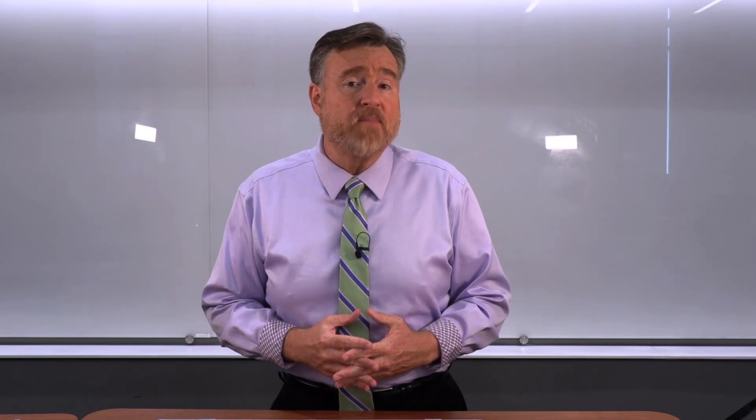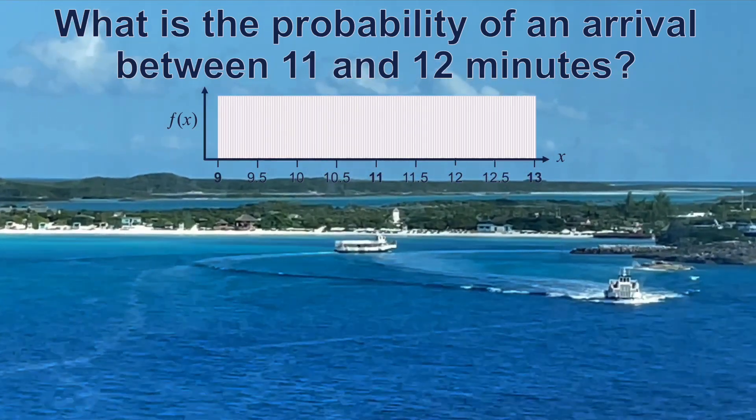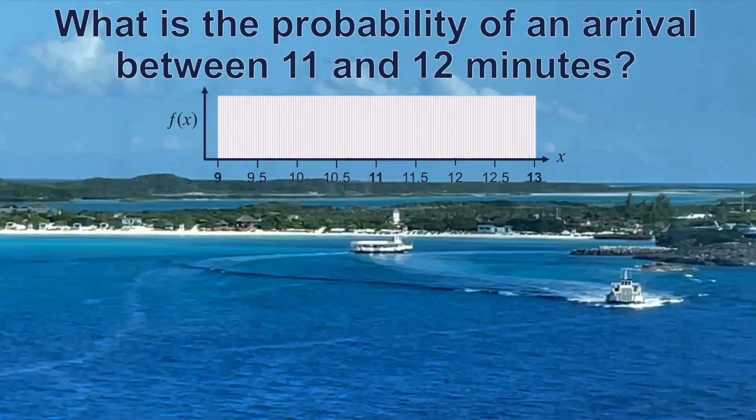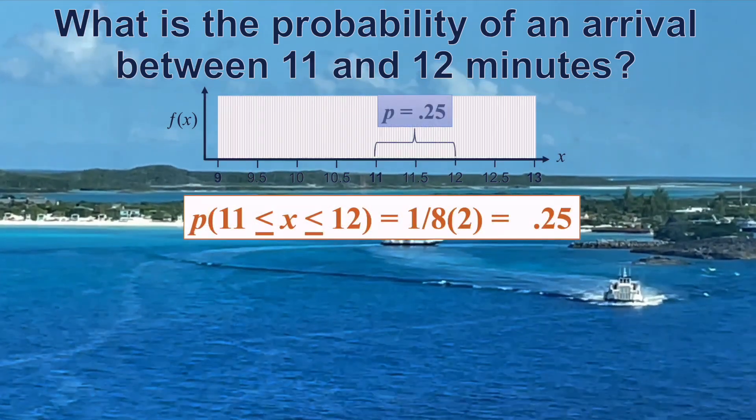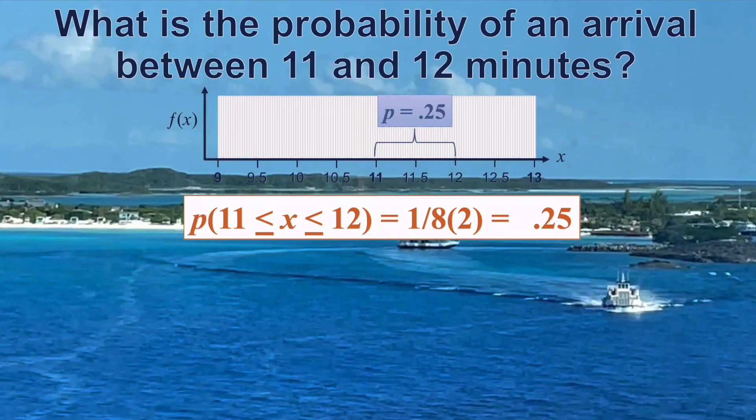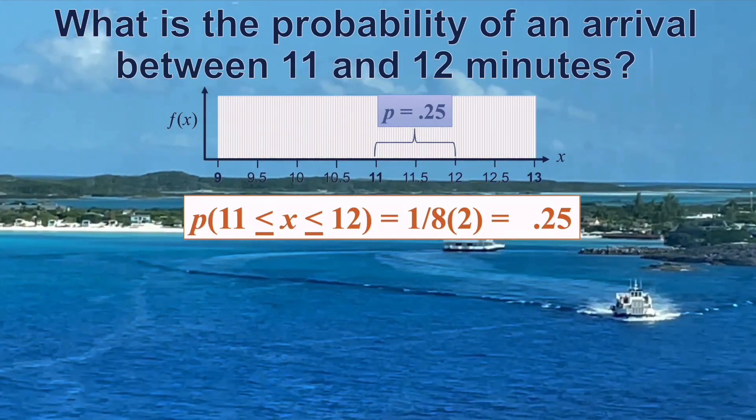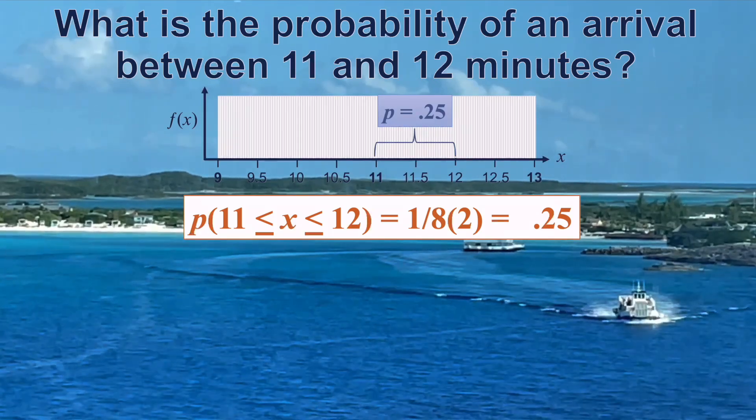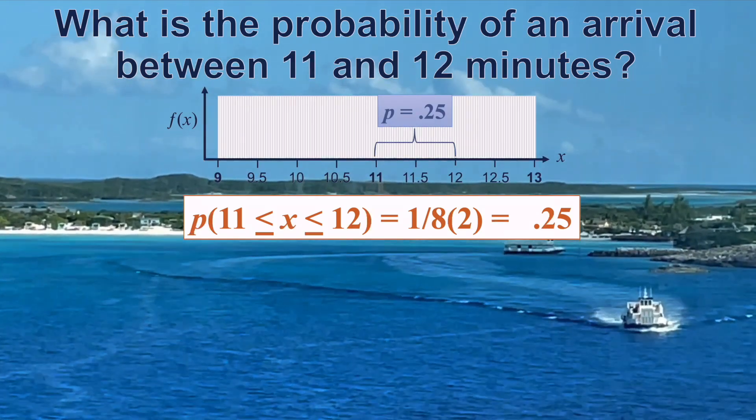What would be the probability of an arrival time between 11 and 12 minutes? To answer this, we should consider the interval within this distribution. 11 to 12 minutes is two of the eight intervals, which would be one-quarter of the distance underneath the distribution. Therefore, the probability of an arrival between 11 and 12 minutes is .25.